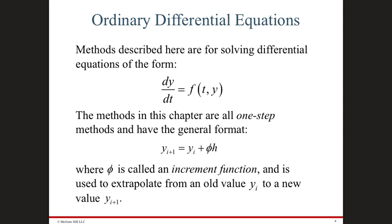The methods we will look at here are called one-step methods. They take the general form where y at point i plus 1 is equal to y at point i. So if you take steps in 1 — t equals 1, 2, 3, 4, 5, 6, and so on — y at t equals 2 is equal to y at t equals 1 plus some function phi multiplied by some step h. The step is the difference between t at this point and t at the next point — that's the increment at which you increase the independent variable t. That's called a one-step numeric solution approach.